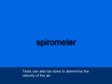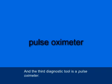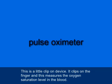Tests with the spirometer can also be done to determine the velocity of the air. The third diagnostic tool is a pulse oximeter (P-U-L-S-E O-X-I-M-E-T-E-R). This is a little clip-on device that clips onto the finger and measures the oxygen saturation level in the blood.